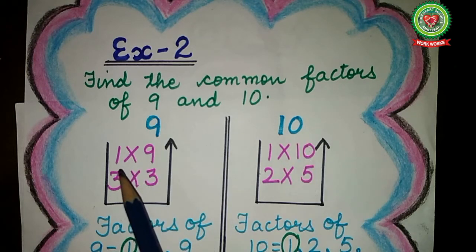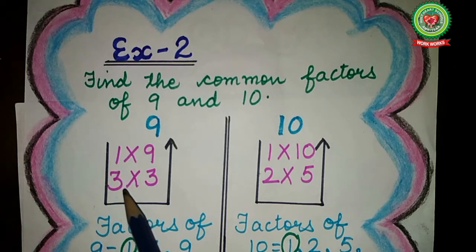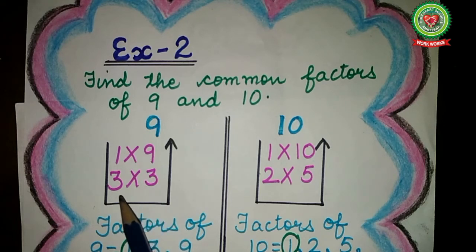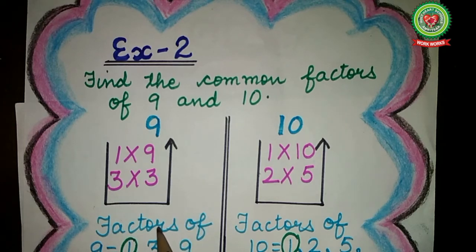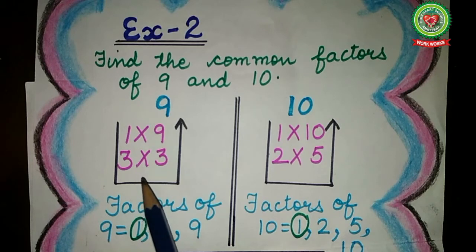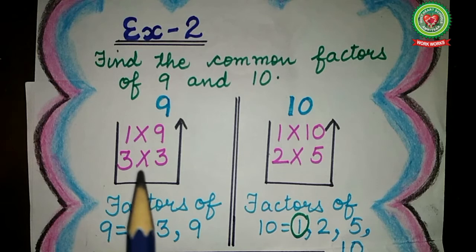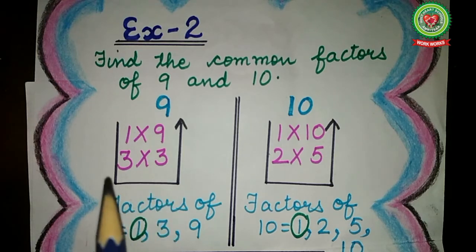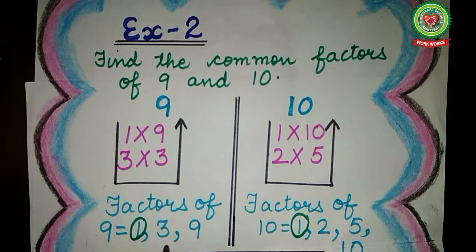Again, start with 1 table. On 1 table, 9 comes on 9 — 1 nine is 9. After 1 table, turn to 2 table — on 2 table, 9 doesn't come, so turn to 3 table. On 3 table, 9 comes on 3 — 3 threes are 9. Now students, you can see the number is repeating itself, so make a U sign. Factors of 9 are 1, 3, and 9. A question may arise: why have I not written 3 two times? Because 3 is repeating itself, so we will not write it twice — we will write it only once. 3 is a factor of 9, so only 1 time we will write 3.